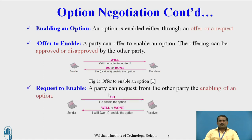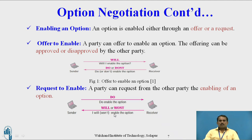Request to enable: a party can request from the other party the enabling of an option. The client or sender machine sends 'DO enable the option,' and the server can reply 'I will enable' or 'I won't enable.' If the user wants to enable, he sends 'I will enable'; if not, 'I won't enable the option.' Like this, they can send the response to the client.